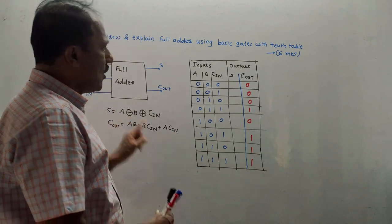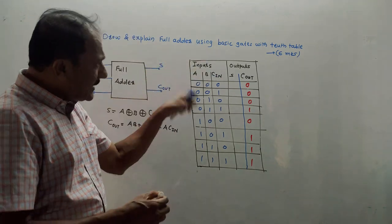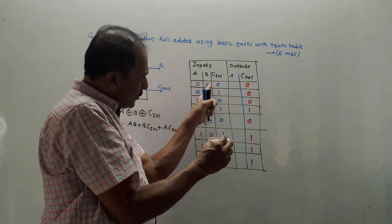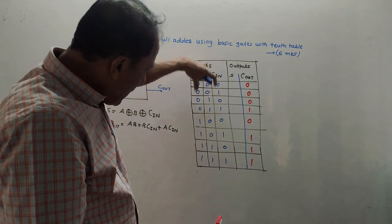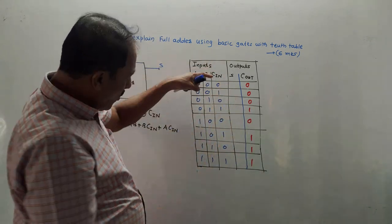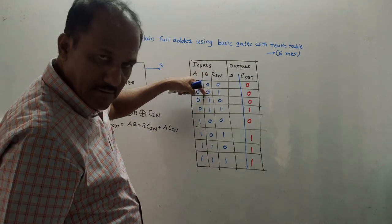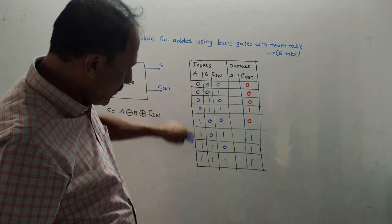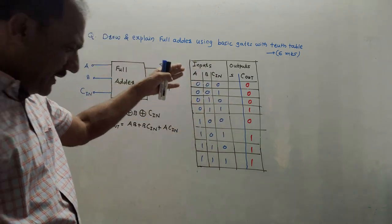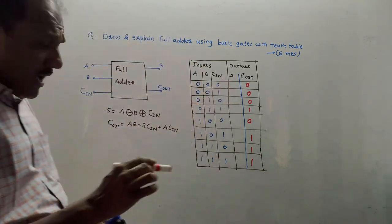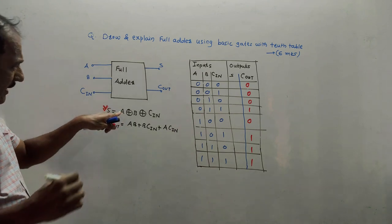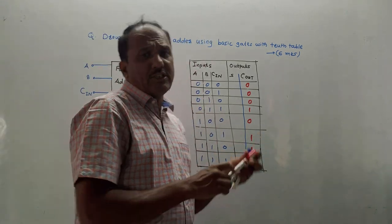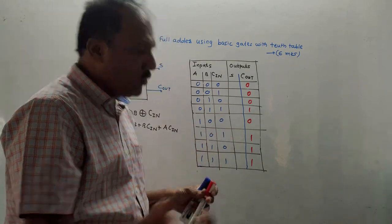For the truth table with three inputs, combinations go from 0-0-0 to 1-1-1. In the last input column write alternately 0,1,0,1,0,1; in the second-last column write 2 times 0, 2 times 1, 2 times 0, 2 times 1. For sum using XOR: if there are odd number of 1s in the input the output is 1, otherwise 0. For 0-0-0: S=0. For 0-0-1: one 1 (odd), S=1. For 0-1-0: one 1 (odd), S=1.